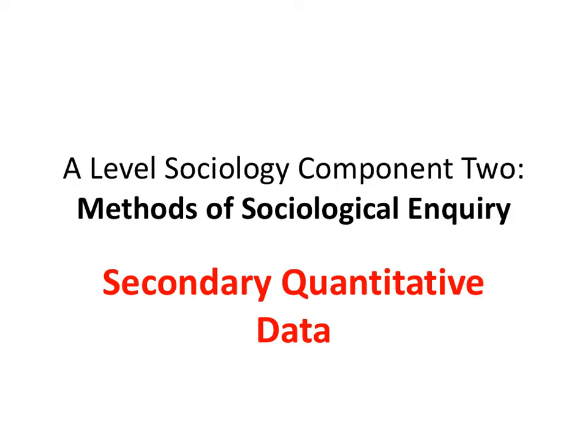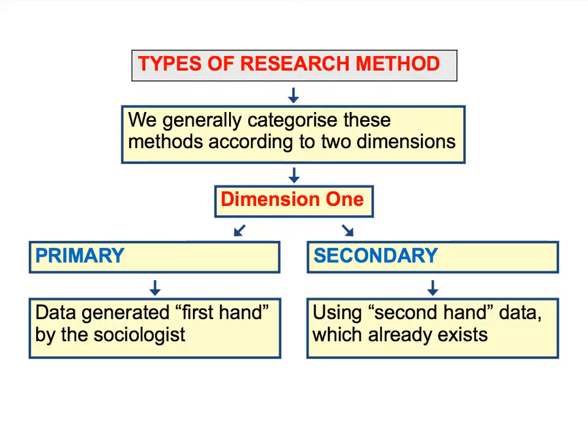Welcome back to another Component 2 screencast. In this video we're going to examine the use of secondary quantitative data in sociological research. In the last few screencasts we've been looking at the main types of primary research methods that sociologists use to gather first-hand data, particularly different types of observational methods and different ways of asking questions.